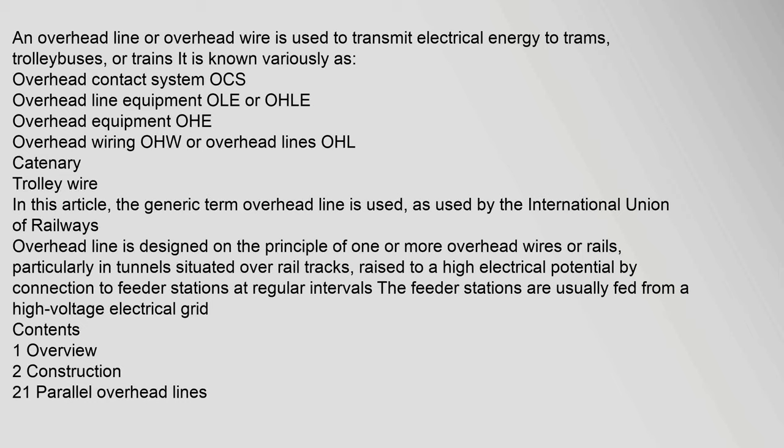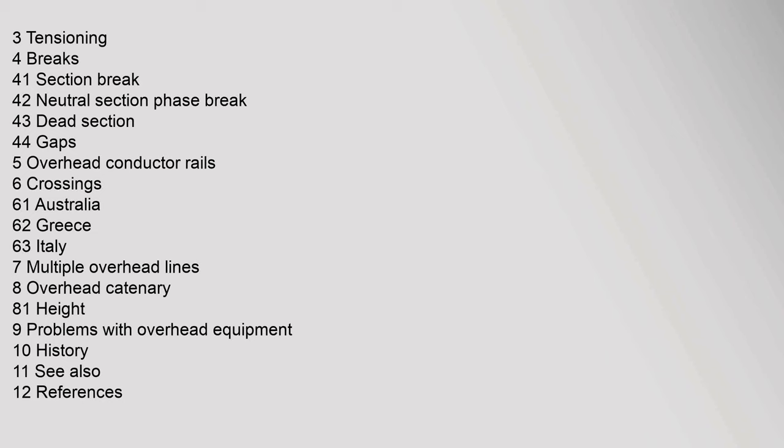Overhead line is designed on the principle of one or more overhead wires or rails, particularly in tunnels, situated over rail tracks and raised to a high electrical potential by connection to feeder stations at regular intervals. The feeder stations are usually fed from a high-voltage electrical grid.